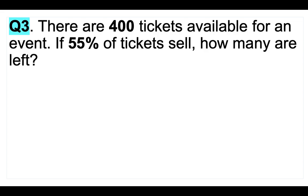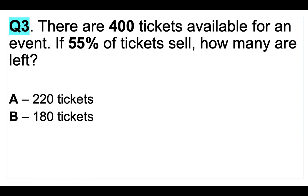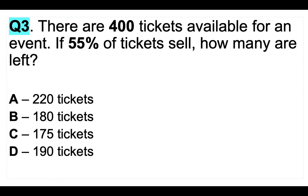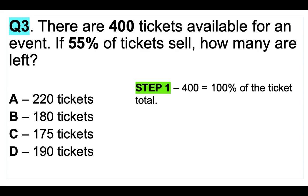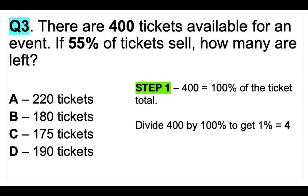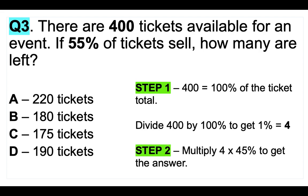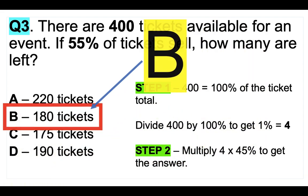Question 3. There are 400 tickets available for an event. If 55% of tickets sell, how many are left? Is it A) 220 tickets, B) 180 tickets, C) 175 tickets, or D) 190 tickets? To calculate this, think about 400 tickets as being 100% of the total — we're trying to find 45%. Divide 400 by 100 to get 1%, which is 4. Then multiply 4 by 45 to get 180 tickets. The answer is B) 180.